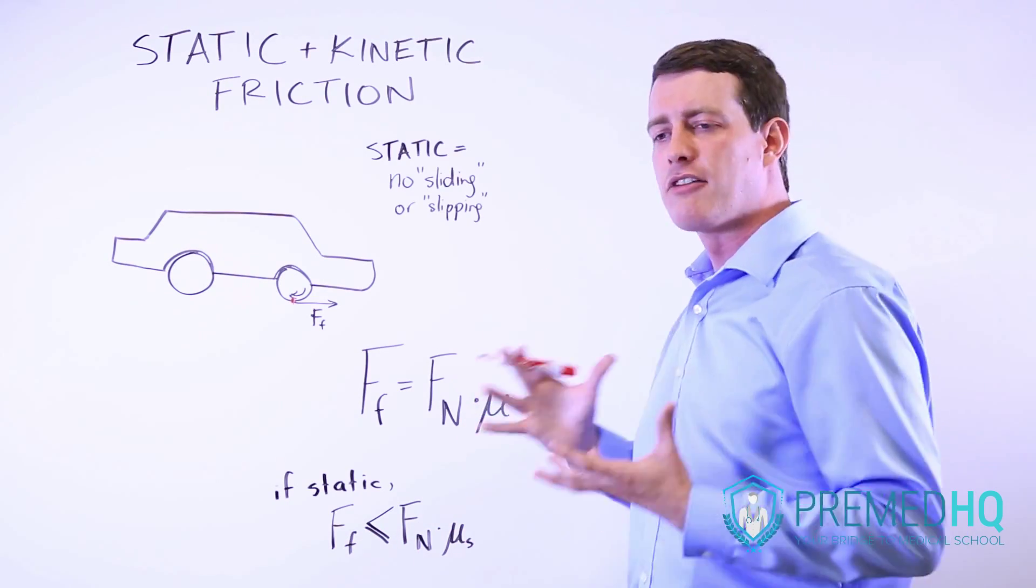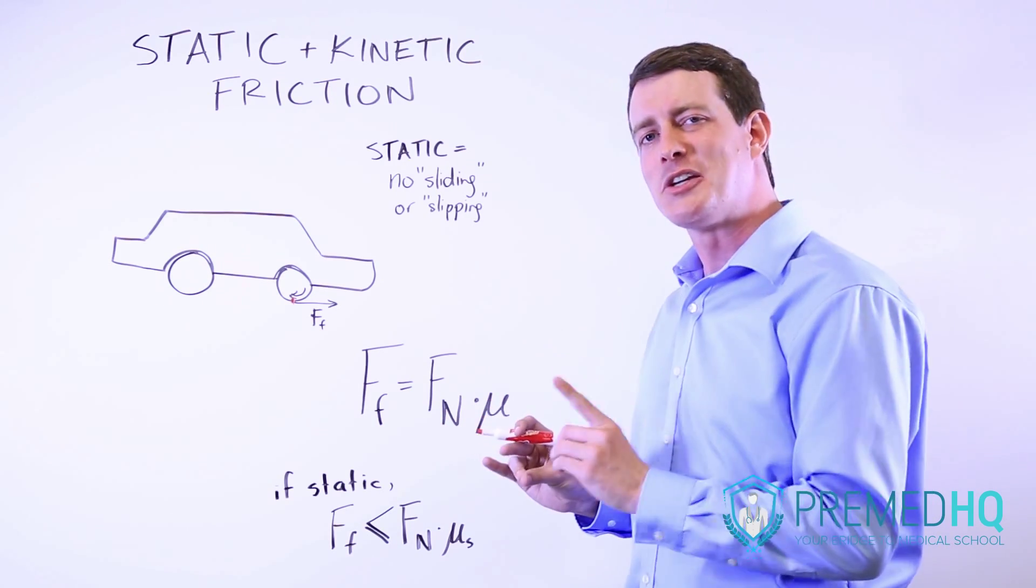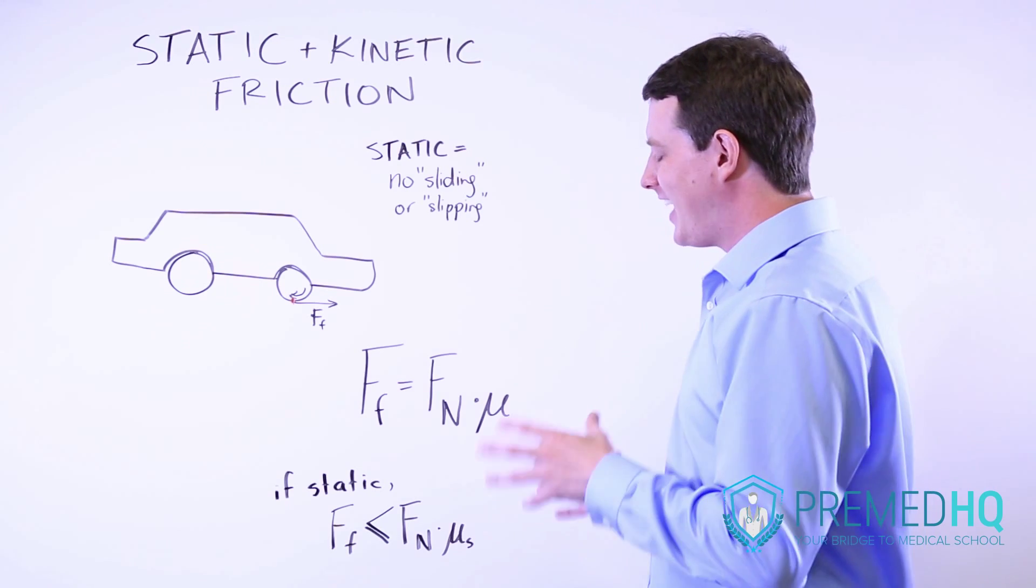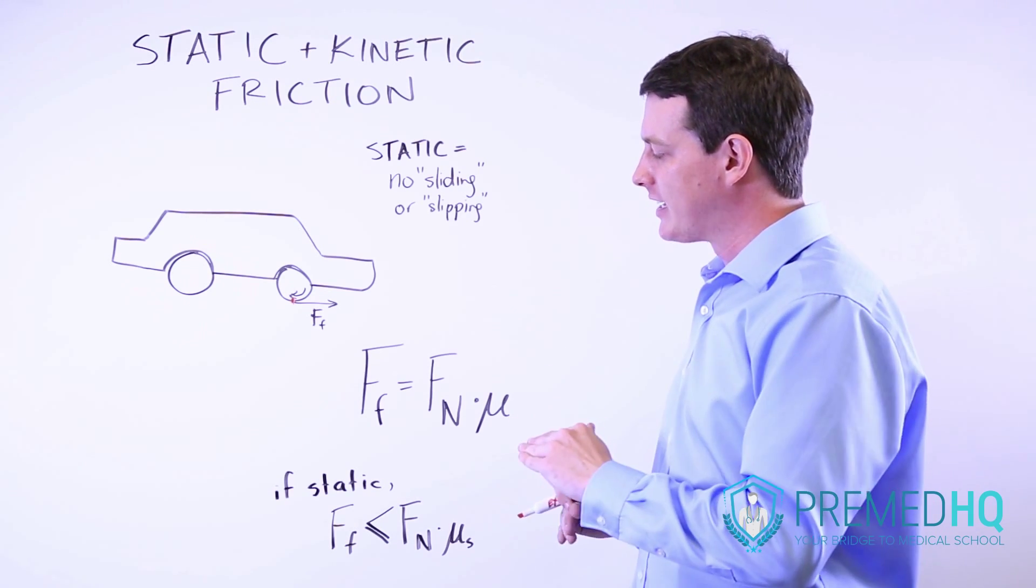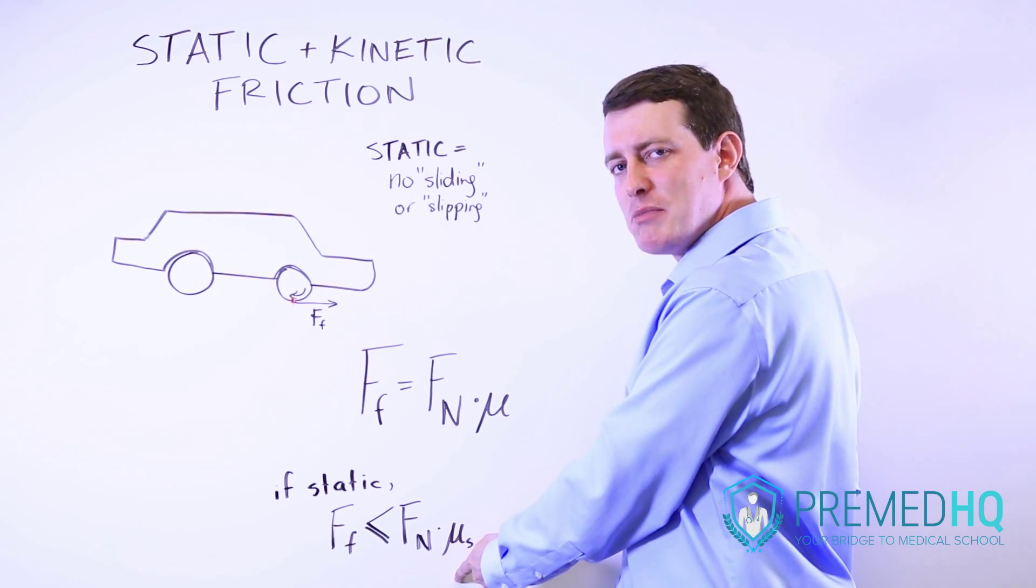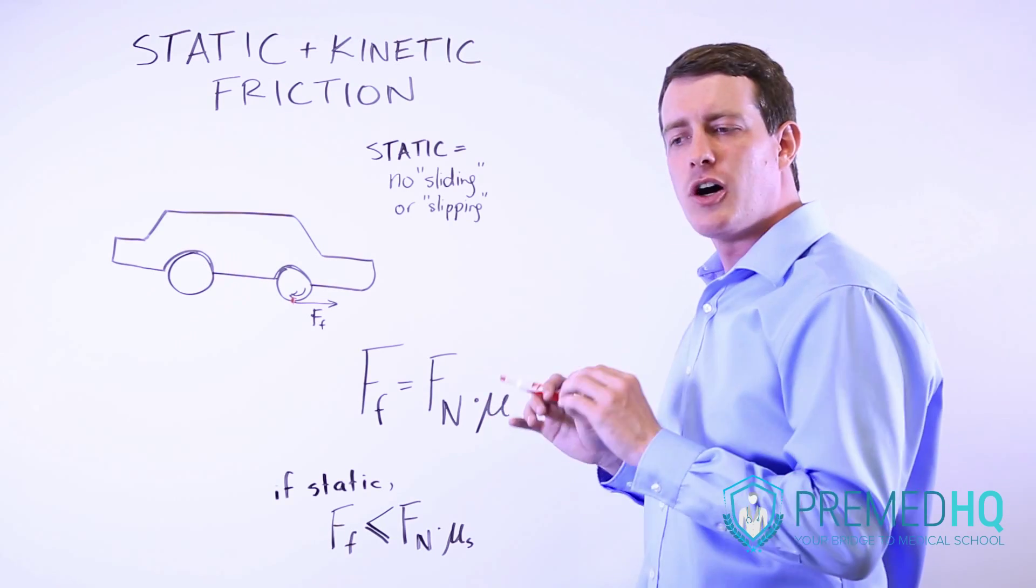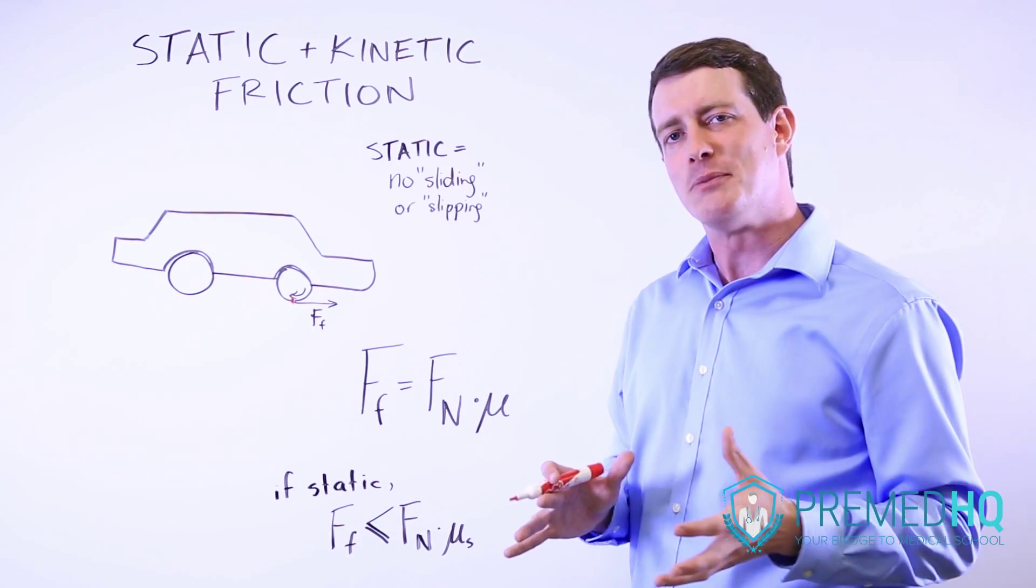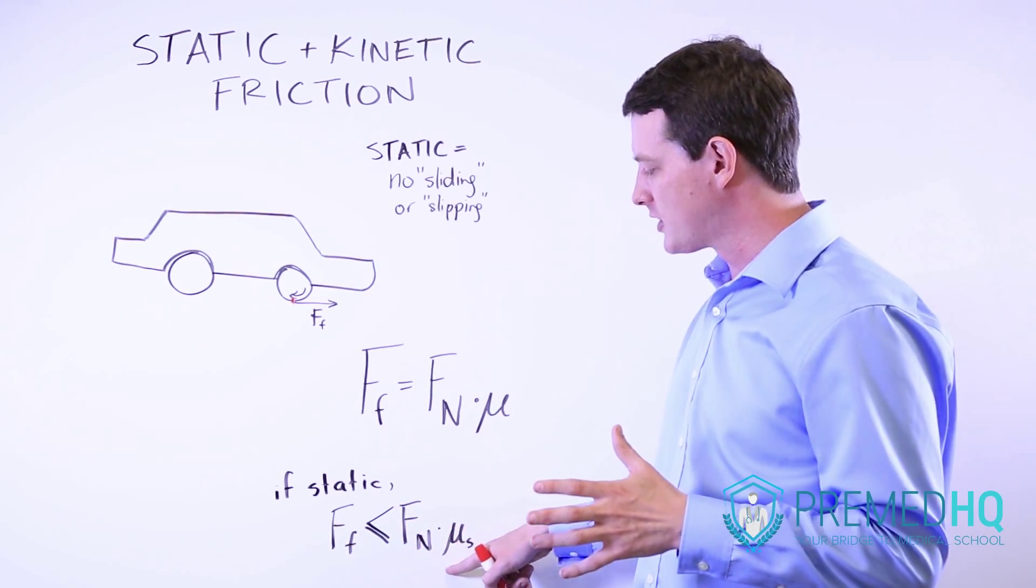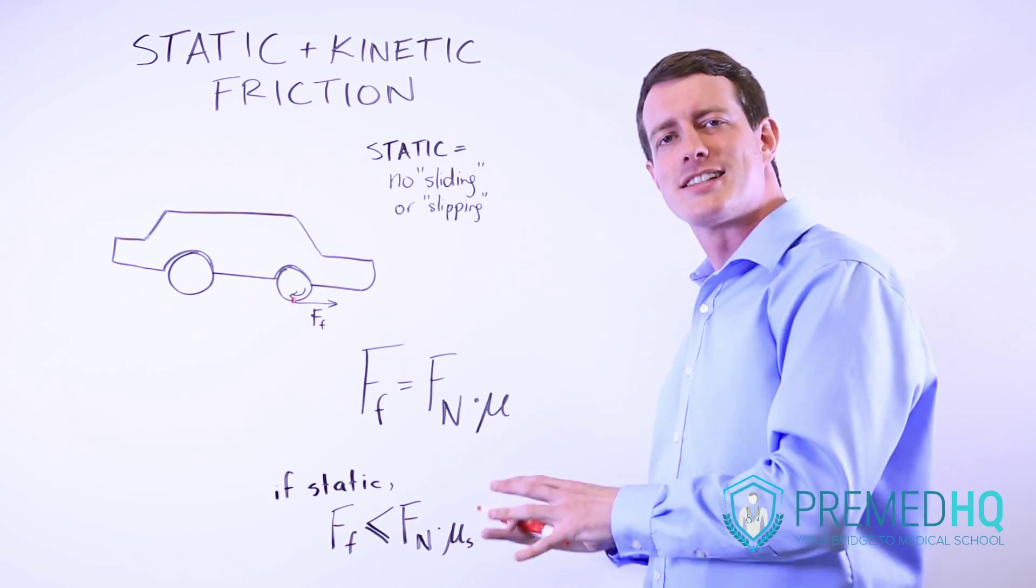Static friction and kinetic friction have the same formula, but there's one distinction you need to be aware of. And that distinction is that if it's static, it can be up to the normal force times mu, normal force times the frictional coefficient, because static friction only exists as much as it needs to. If it doesn't need to be normal force times the entire frictional coefficient, then it won't do that. It will be less than that amount.